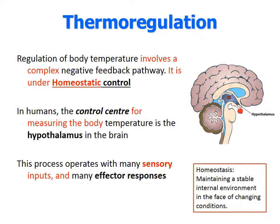Let's look at thermoregulation — 'thermo' meaning temperature, 'regulation' meaning trying to keep it the same. Regulation of body temperature has a negative feedback pathway and is under homeostatic control. We want to keep it around 37 degrees Celsius. Negative feedback means if we're cold we make ourselves hot, and if we're hot we make ourselves cold.